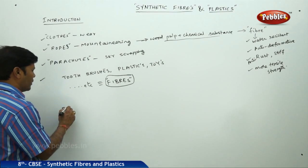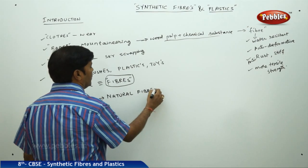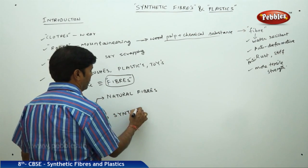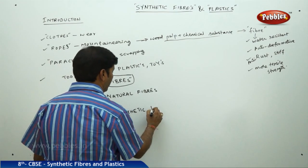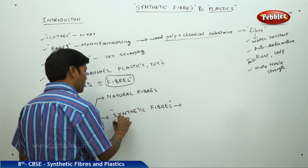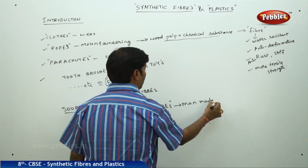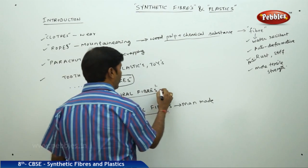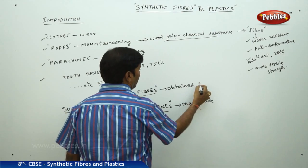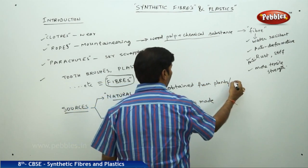So what are the sources of fibers? If you go for sources, we have natural fibers and we have synthetic fibers. Synthetic fibers are man-made, and natural fibers are obtained from plants and animals.